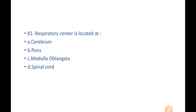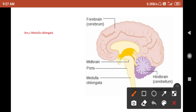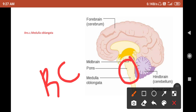First question: the respiratory center is located at — A) cerebrum, B) pons, C) medulla oblongata, D) spinal cord. Our respiratory system is controlled by a center in one part of the brain. The answer is medulla oblongata. The respiratory center located there controls our respiratory rate, rhythm, and everything related to respiration.